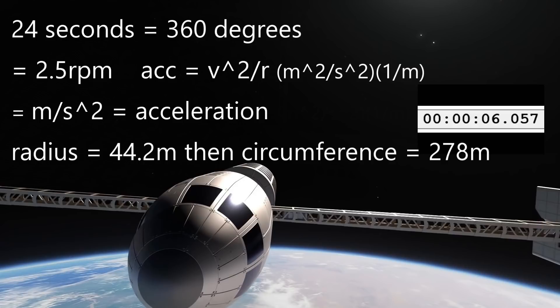If it took 6 seconds to go one-fourth this distance, that would be 278 divided by 4 equals 69.5 meters. Dividing that by the 6 seconds it took the modules to rotate that distance gives us 11.6 meters per second. Now to get the acceleration felt at a radius of 44.2 meters with an angular velocity of 11.6 meters per second.